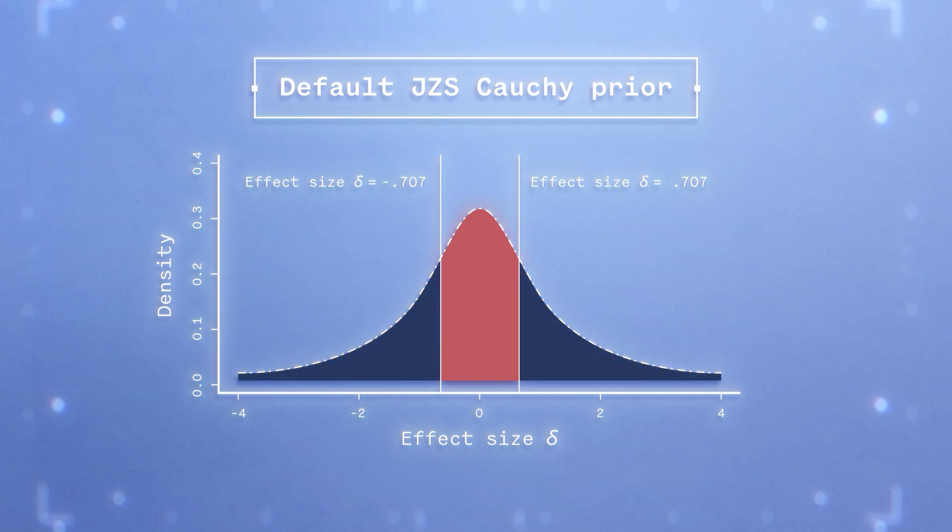Note that the default value of 0.707 is arbitrary and has no straightforward theoretical justification. For the resulting Bayes factor calculation to be meaningful, the scale parameter needs to be adjusted according to your expected range of effect sizes.